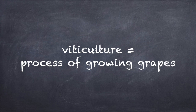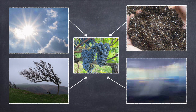Grape vines are greatly impacted by the climate and region in which they're grown. Factors such as the amount of sunlight, rain or wind, temperature, soil composition and quality, and even the topography of the land can have a massive influence on the character and quality of the grapes grown.